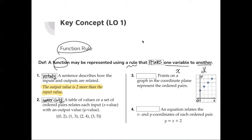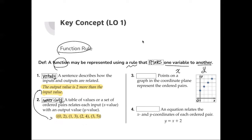The second way is the numerical way — just listing a set of ordered pairs like (0,2), (1,3), (2,4), (3,5). This is a numerical way of expressing a function. If you take a look, these two representations represent the same thing, because all output values are two more than the input value.